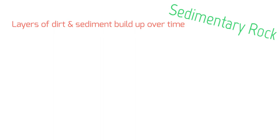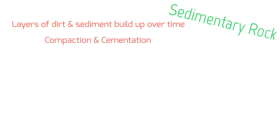So sedimentary rocks are created through layers of dirt and sediment building up over time. There's a lot of pressure — they're really pounding into each other and then hardening. Our big fancy science words for this are compaction and sedimentation. These two words summarize what's going on. Now that we've looked at how they are created, let's take a look at a few examples.